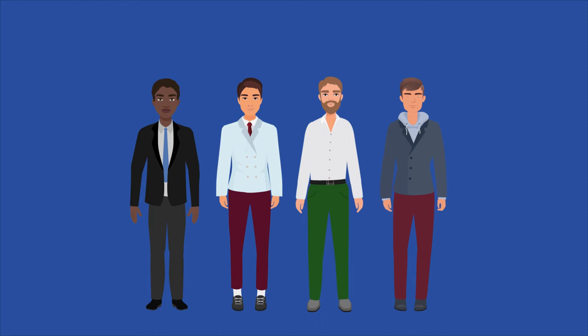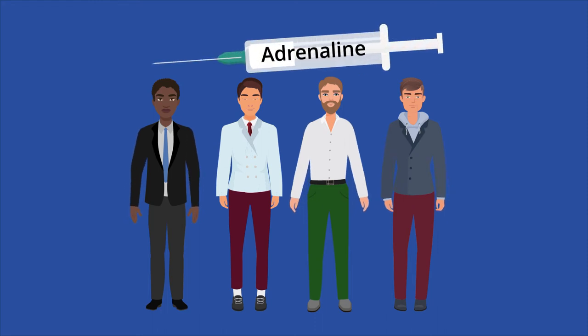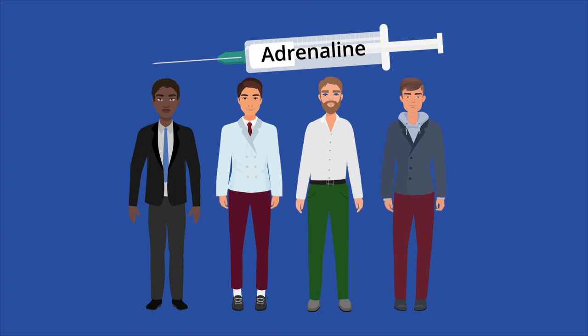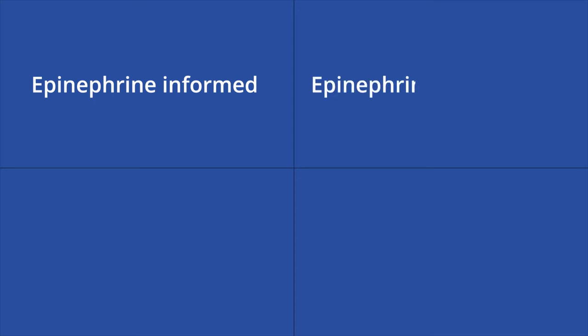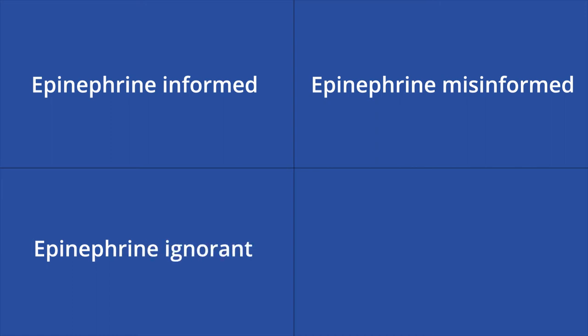The Schachter and Singer experiment was conducted at Columbia University with 184 male subjects. Participants were split into four different groups and told they'd be injected with a vitamin before having their eyesight tested. In reality, three of the test groups were injected with epinephrine, or adrenaline. Depending on which group they were in, subjects were informed of the correct side effects like an increased heart rate, misinformed about symptoms like itching and headaches, or not informed of potential side effects at all. Members of the fourth group, the control, were injected with a placebo and not informed of potential side effects.